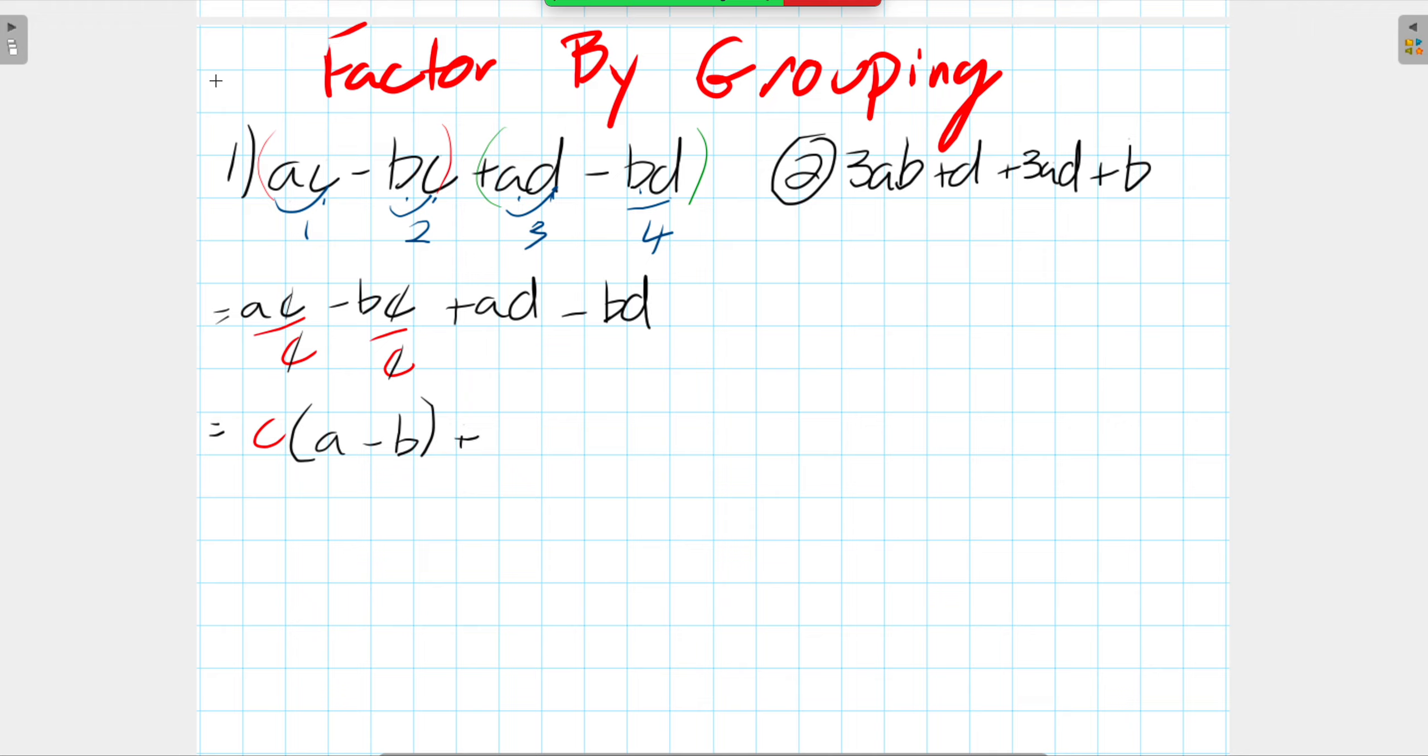What about our second one? Well, in our second one, we have the term D. So I can divide both of these terms by D. Same concept, the D comes out. And in this case, we get A minus B.